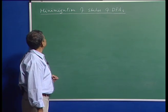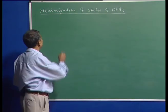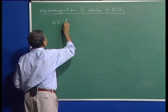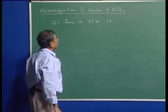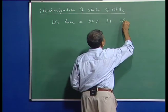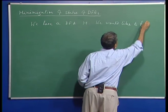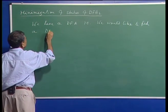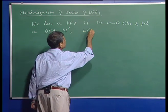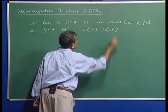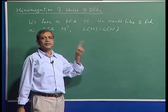Let us now consider the topic of minimization of states of DFAs. The problem is: we have a DFA M, and we would like to find a DFA M' such that both M and M' accept the same language, and of all DFAs accepting that language, M' has the minimum number of states.